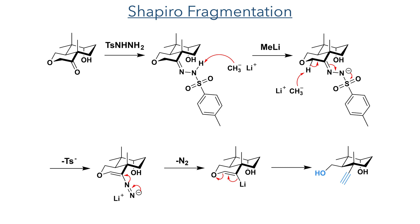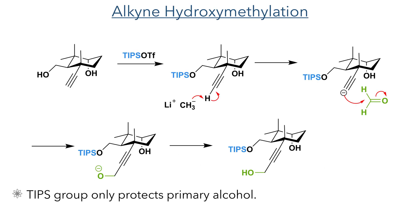The stereochemical outcome of this reaction was guaranteed due to the configuration of the precursor pyrinone ring. This bond cleavage strategy was likely inspired by the carbon-carbon bond cleavage which occurs during the biosynthesis of this molecule. With the alkyne now formed, it was a trivial matter to perform a hydroxymethylation sequence.